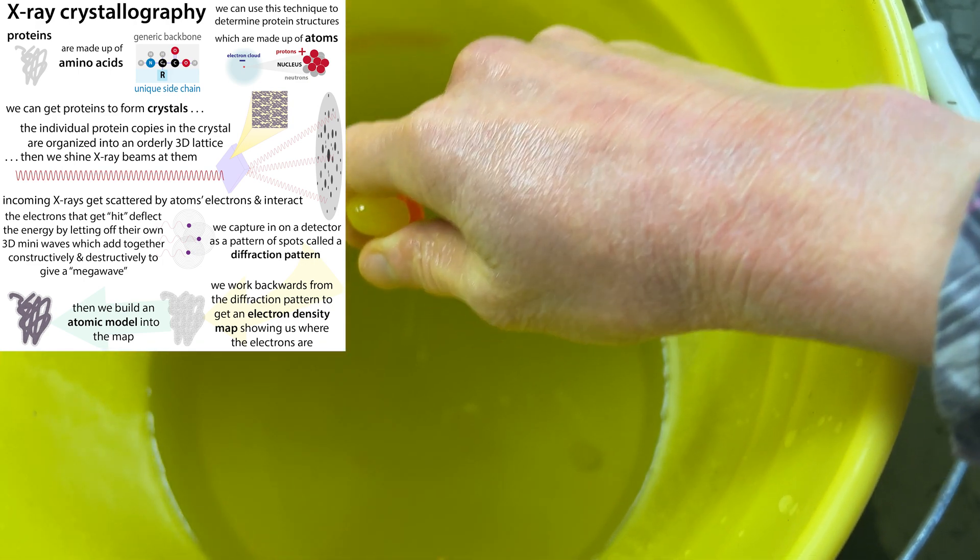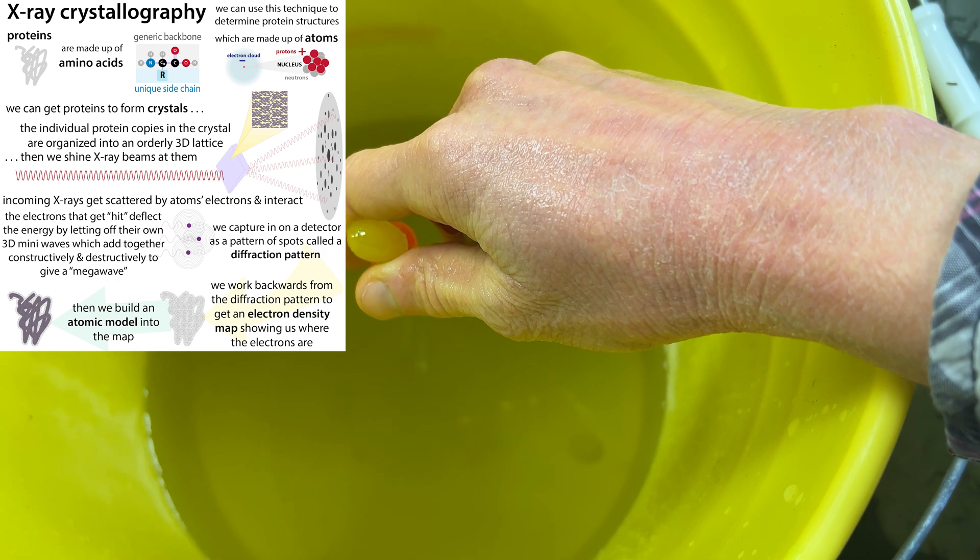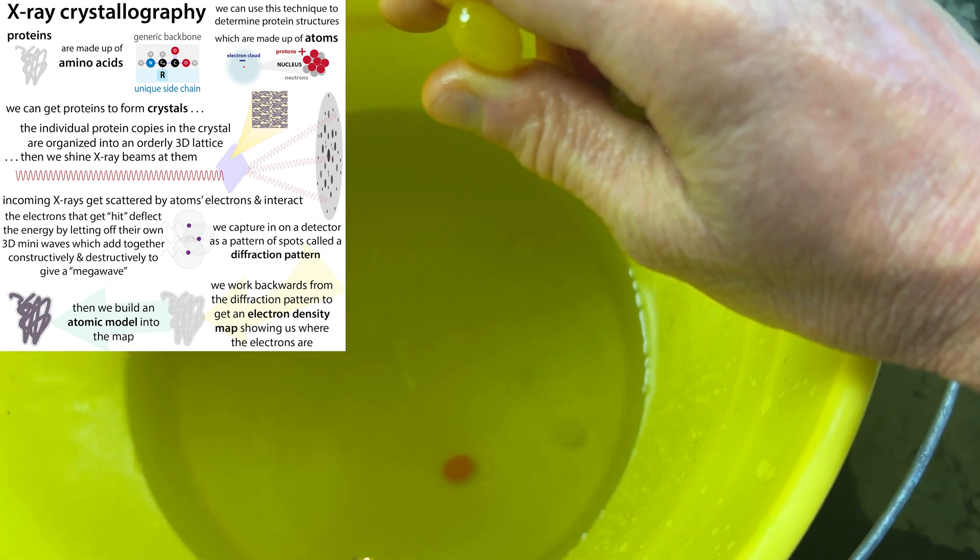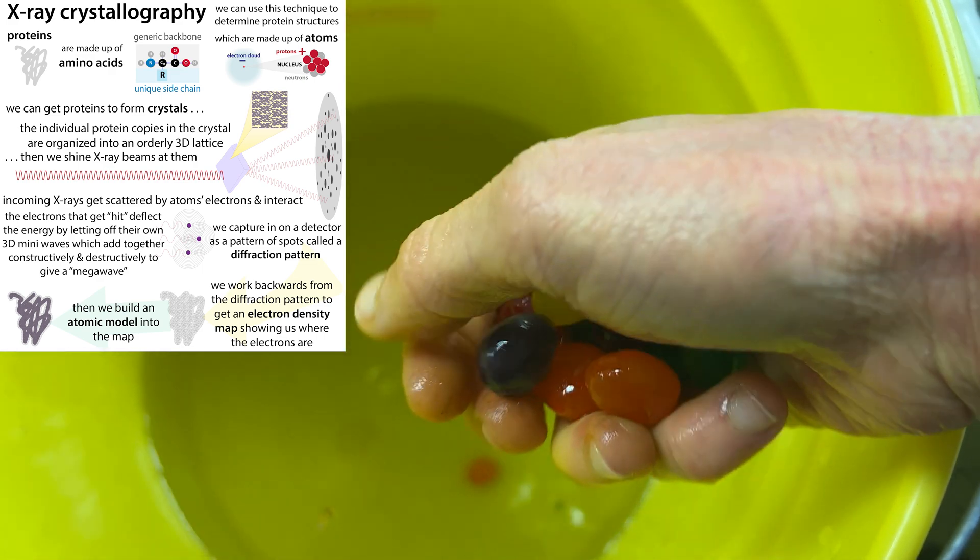but you can think about when an x-ray hits a molecule, the electrons in that molecule are going to interact with that wave and scatter it. This is going to produce a new wave, a little mini wave.